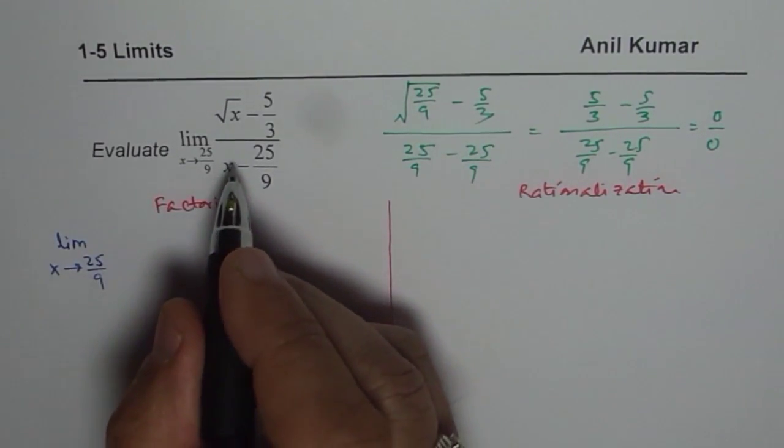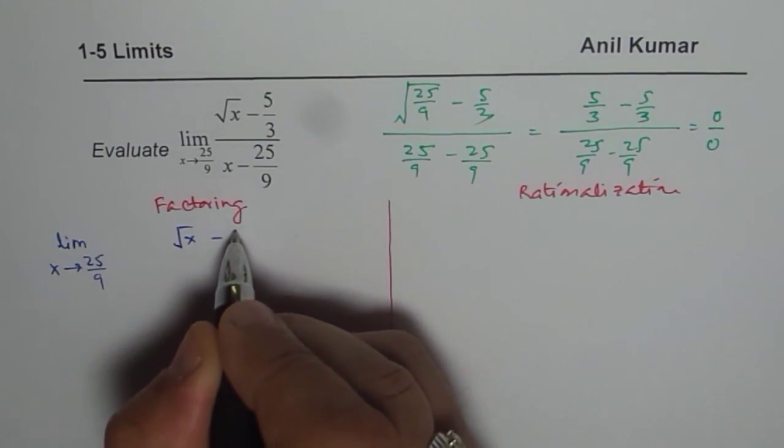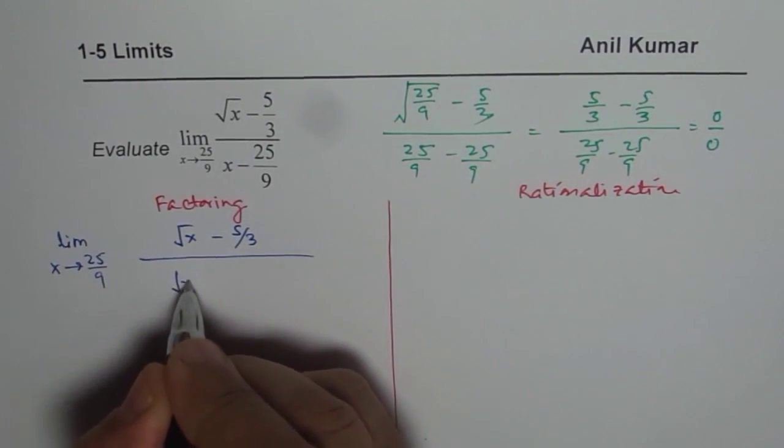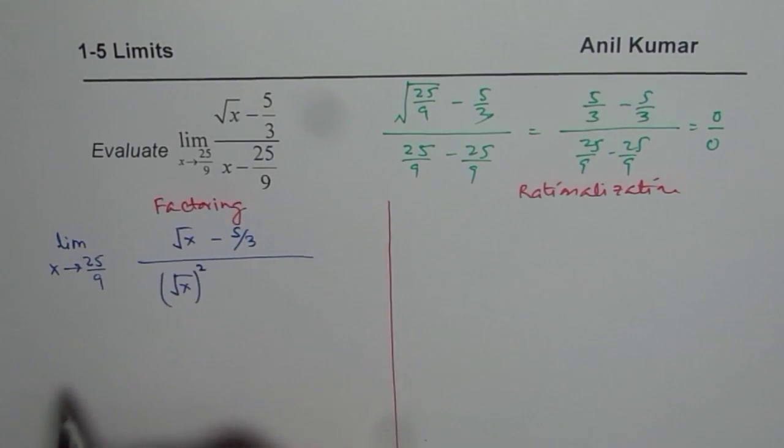So the numerator for us is square root of x minus 5 over 3. And the denominator could be written as square root of x square. That is x, right?